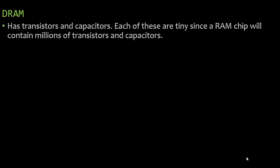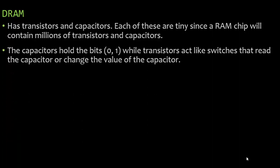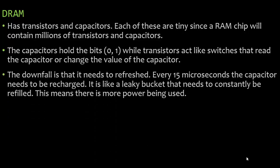Dynamic random access memory has transistors and capacitors — a RAM chip will contain millions of them. The capacitors hold the bits, zeros and ones, while the transistors act like switches that read or change the value of the capacitor. The downfall of DRAM is that it needs to be refreshed — this is why it's called dynamic. Every 15 microseconds, the capacitor needs to be recharged, like a leaky bucket that constantly needs to be refilled. This means more power is used, but it is less expensive than SRAM.